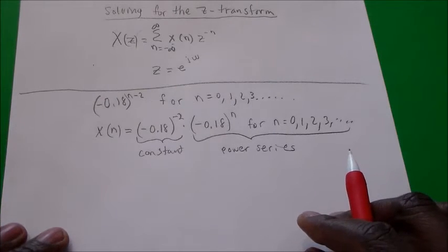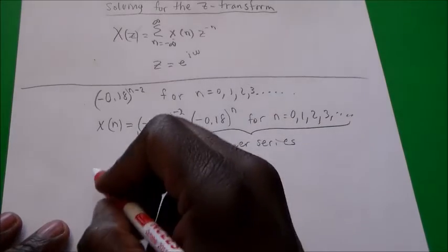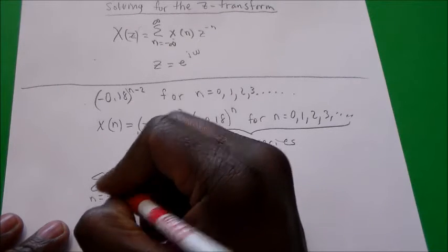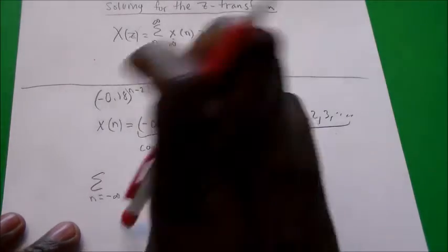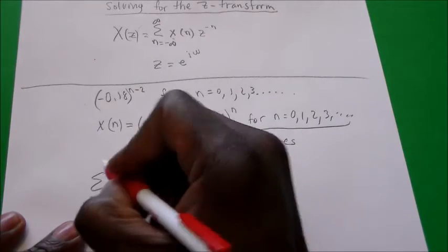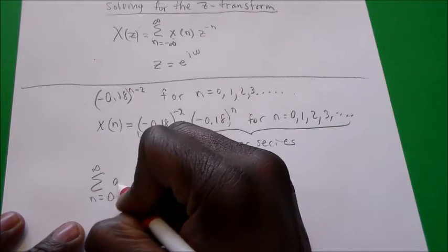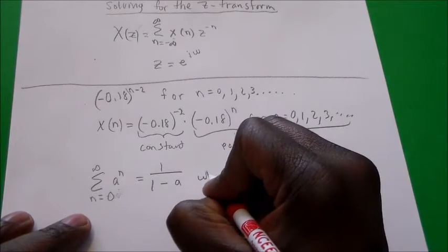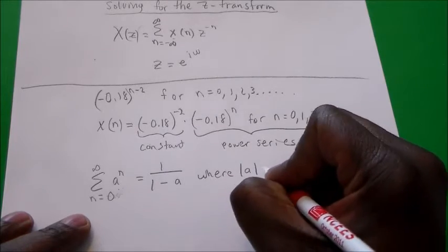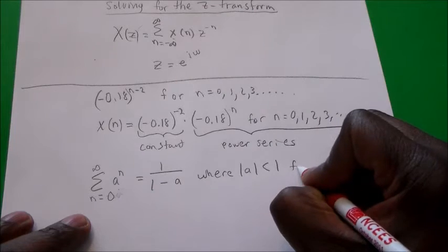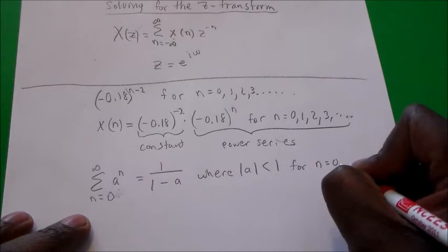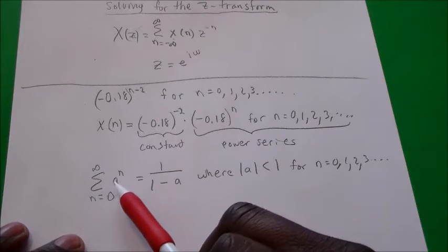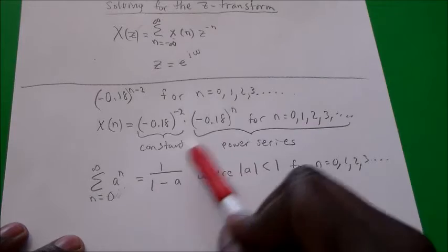Given that's the case, recall the power series formula: the summation from N equals 0 to infinity of A to the N equals 1 over 1 minus A, where the absolute value of A is less than 1, for all N from 0, 1, 2, 3, and so on. You should be able to see that our expression looks very similar to this power series formula.